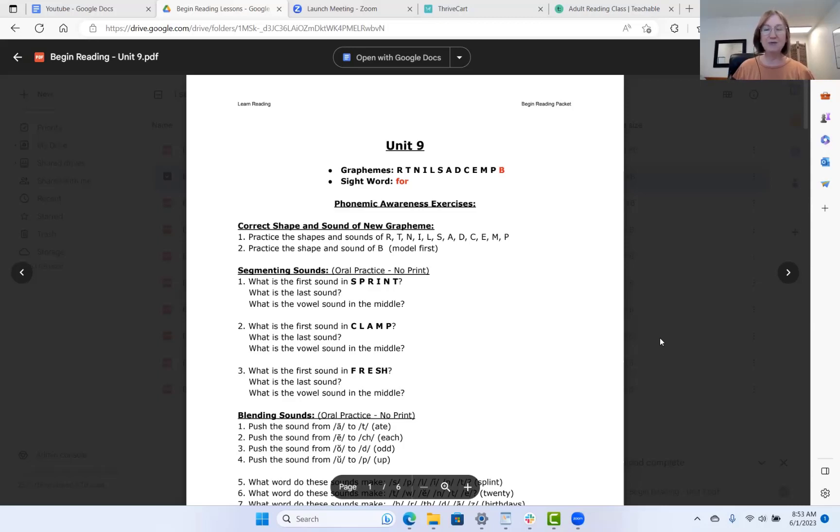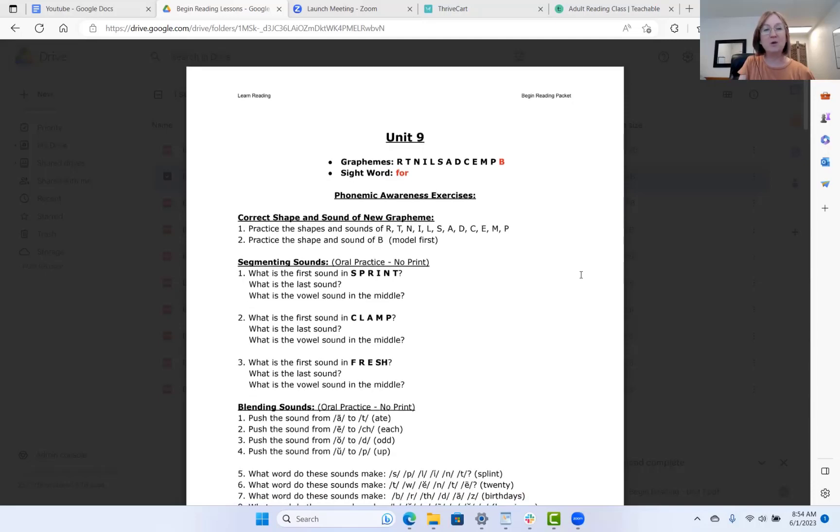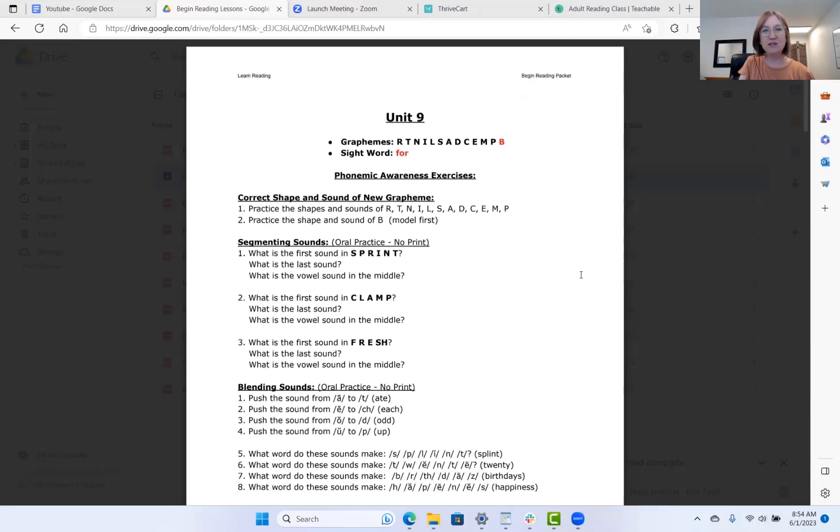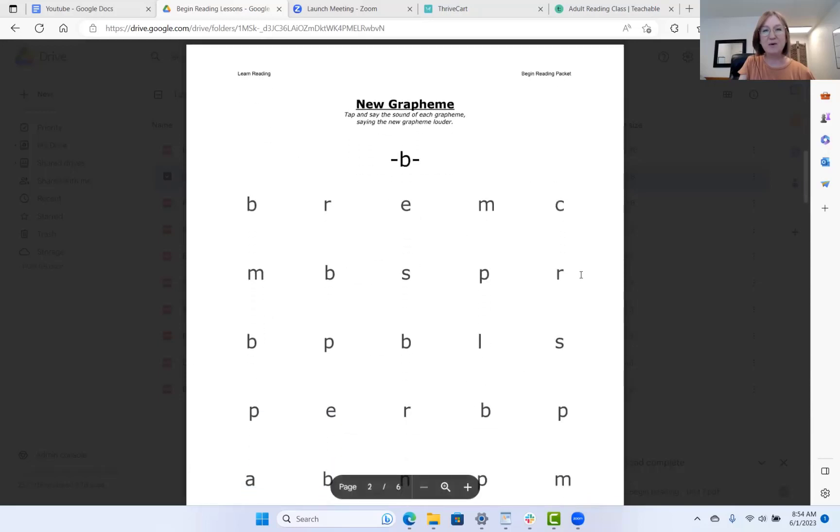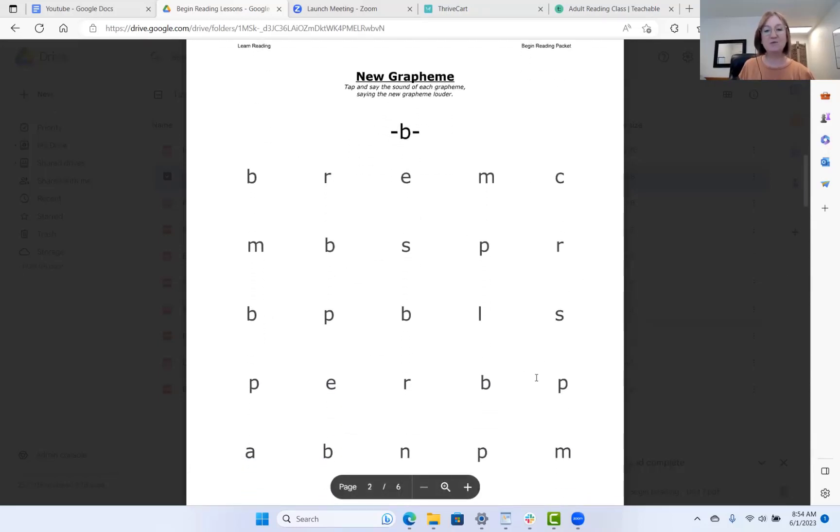Okay, we are working on Begin Reading Lesson Unit 9, and our new grapheme for today is B. But before we get there, we're going to do some phonemic awareness exercises. If you have these worksheets, skip this page and meet me on page two. I'm going to do some phonemic awareness exercises with you. So to warm up our ears and to develop the skill of being aware of those tiny units of sound within a word, which are called phonemes. That is what phonemic awareness is. It's being aware of the smallest units of sound within a spoken word.